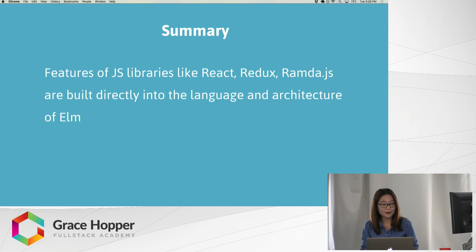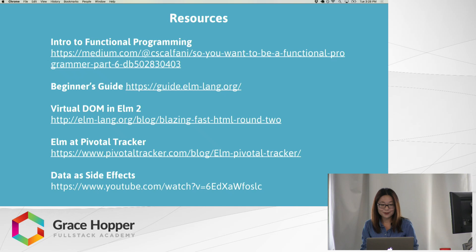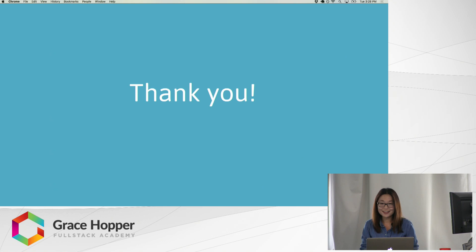To wrap things up, a lot of features of popular JavaScript libraries and tools like React, Redux, and Ramda JS — which applies functional programming concepts to JavaScript — are all actually built into the language and architecture of Elm. As a functional programming language, Elm can help us write code that is very modular, maintainable, less error-prone, and results in a fast web experience for our users. Here are some additional resources — I really encourage you to take a look. I really had a good time learning Elm, especially from our experiences working in React and Redux. Thank you.